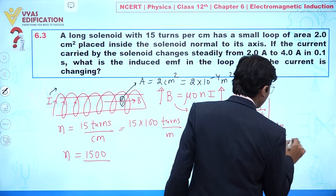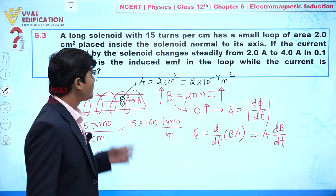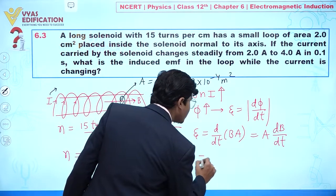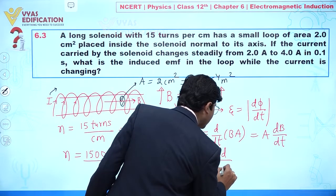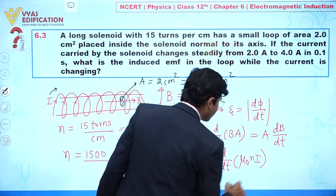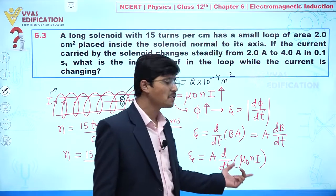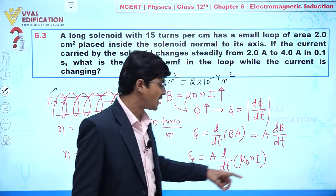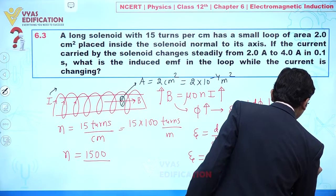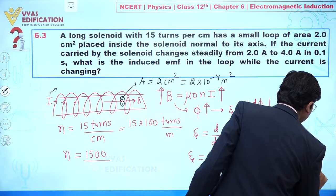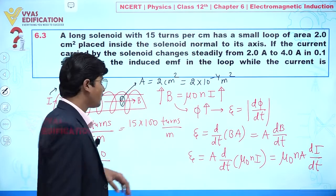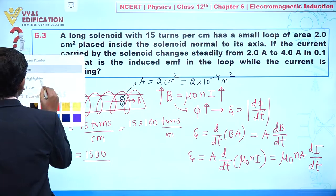The value of B for the solenoid is μ₀nI, so the induced EMF becomes e = A · d(μ₀nI)/dt. Since μ₀ and n are constants, this simplifies to e = μ₀ · n · A · dI/dt. Now we can substitute the values of all these parameters to get the induced EMF.